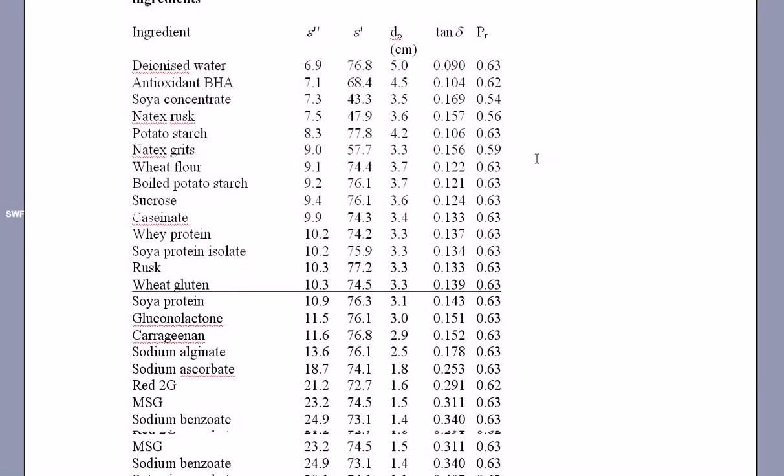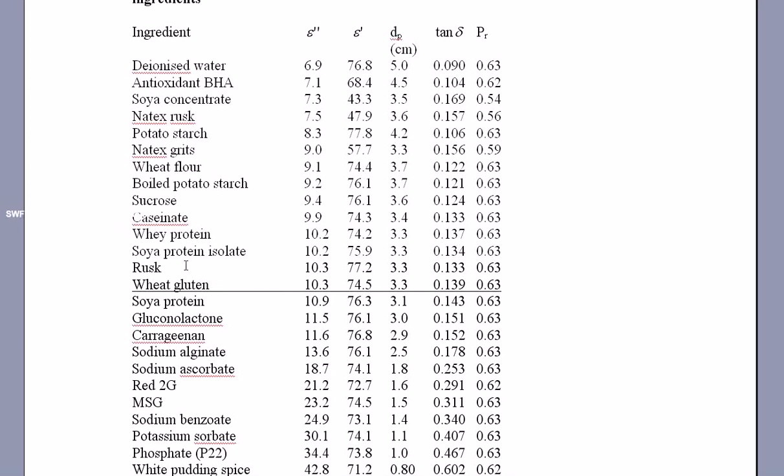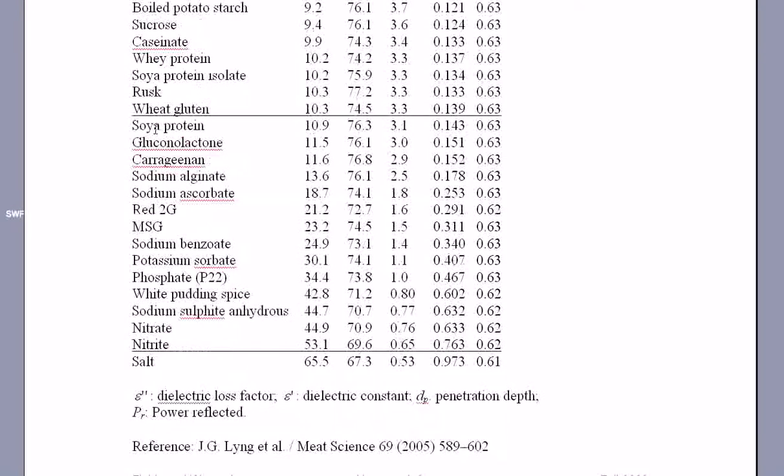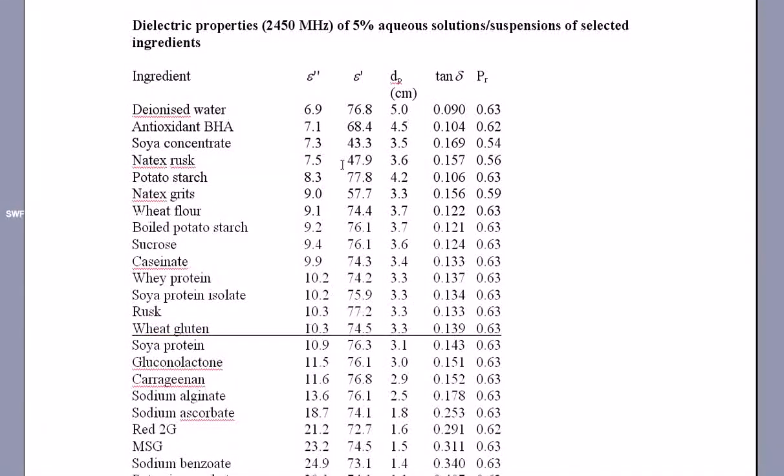So we've got everything from deionized water to whey protein to all sorts of other things. There's two that are underlined, wheat gluten and nitrite. You notice in the case of wheat gluten, it shows that epsilon double prime is 10.3 and epsilon prime is 74.5.